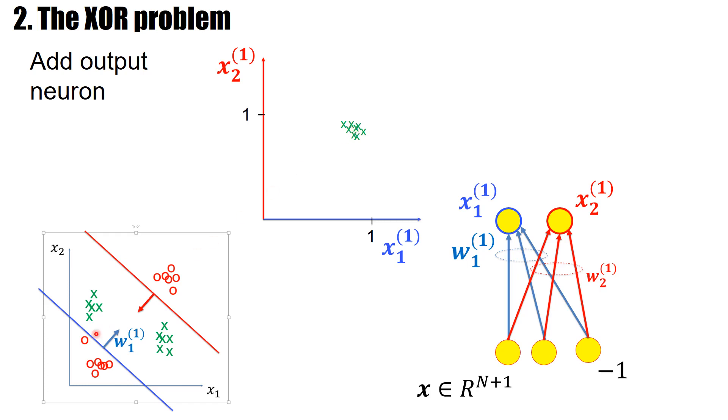Similarly, data points that are negative examples are correctly classified by the blue neuron, but not correctly classified by the red neuron. This is correctly classified by the red neuron, but not correctly classified by the blue neuron. So this group goes here and the other group goes here.